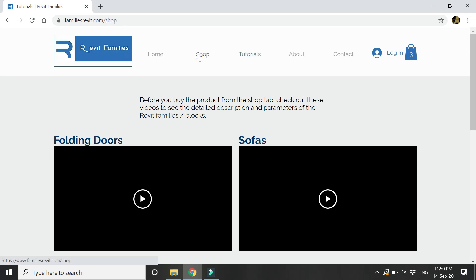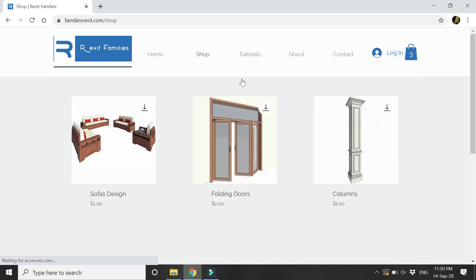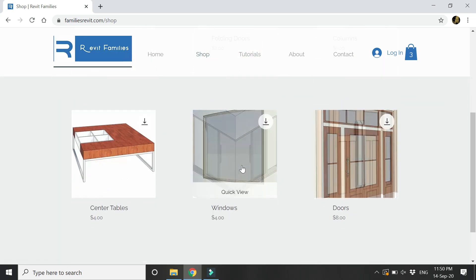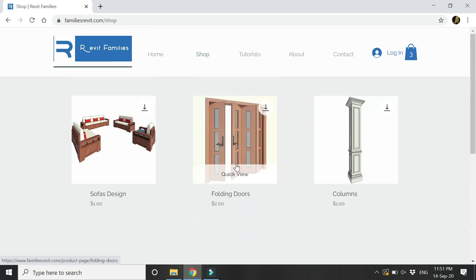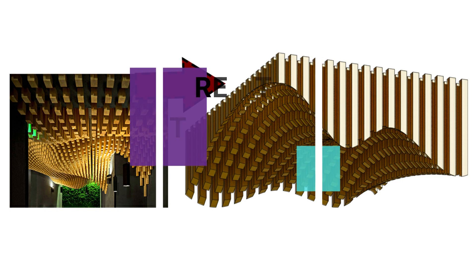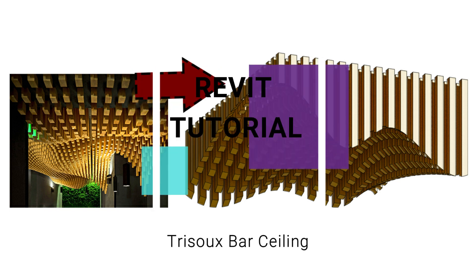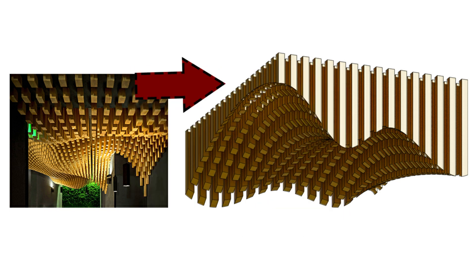From the shop tab you can buy these products. Now let's move towards our tutorial for today — in this video I am going to create the ceiling design of a trisobar. Before we start, please like and share my videos, comment below, and subscribe to my channel. If you have any difficulty or query related to Revit, you can ask me anytime.